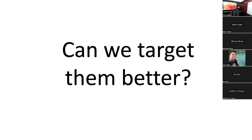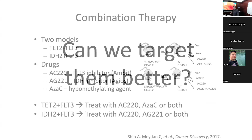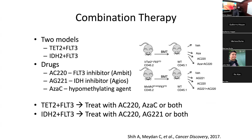Measuring epigenetic heterogeneity was exciting, but it was unsatisfying to only be able to say whether someone had bad AML or really bad AML. This led to a question: could we target things better — not just measure methylation, but do different targeting? Work with Ralph Levine and others has shown that you can use different drug models targeting IDH or FLT3 mutations or DNA-modifying enzymes, including azacitidine, a hypomethylating agent.